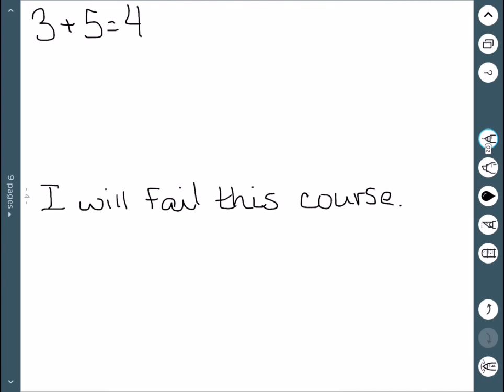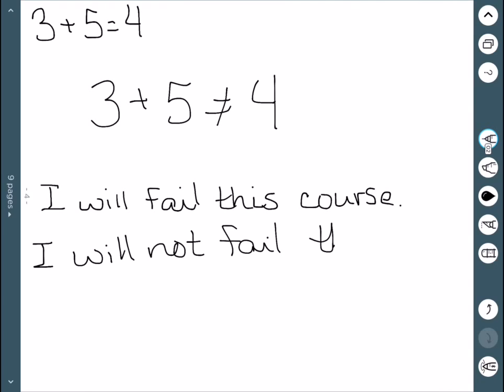Let's do some examples. Three plus five equals four, if we want the negation, three plus five is not equal to four. I will fail this course, the negation: I will not fail this course. And you can see that only one of these is true, the other one is forced to be false, which does correspond to our truth table.